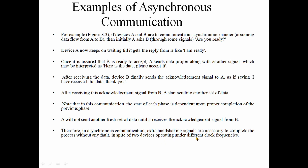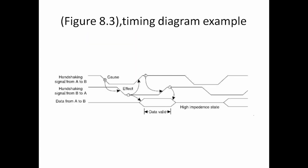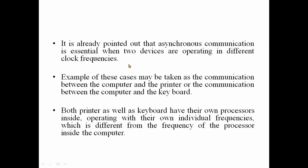Therefore, asynchronous communication means extra handshaking signals are necessary to complete the process without any fault, in spite of two devices operating at different clock frequencies. If a handshaking module is used, signals are exchanged between devices to coordinate the transfer. For example, there are two devices operating at different frequencies — such as computer-to-printer communication or computer-to-keyboard communication, where the printer, keyboard, and computer all have different clock frequencies. This is handled by the handshaking module.